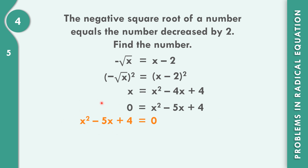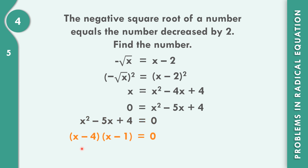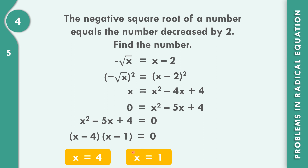Let us get the factors to find the number. Think of factors whose product is 4 and when added give negative 5. The factors are negative 4 and negative 1: negative 4 times negative 1 is positive 4, and negative 4 plus negative 1 is negative 5. So the factors are (x minus 4)(x minus 1) equals 0. Solving x minus 4 equals 0 gives x equal to positive 4. Solving x minus 1 equals 0 gives x equal to positive 1.